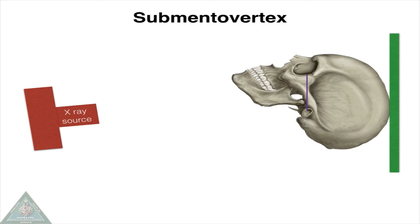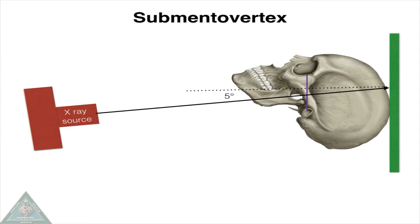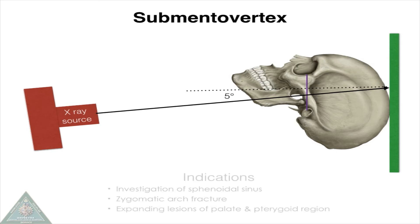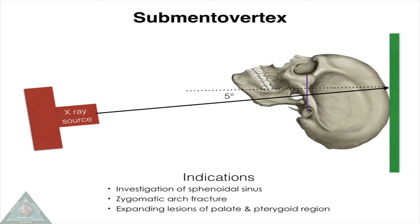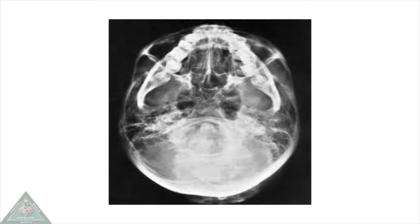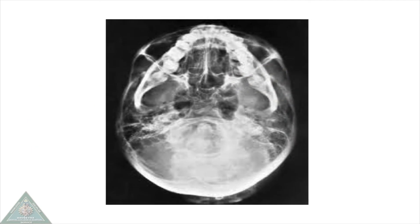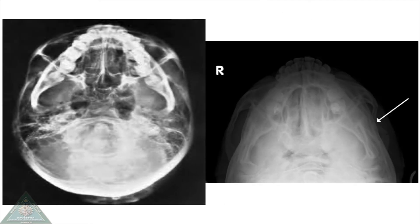Submental vertex view: the patient's head is tilted backwards, the cantho-meatal line is parallel to the image receptor, and the X-ray beam is directed at an angle of 5 degrees to the horizontal, centered through the cranium. This radiograph is mainly indicated for detection of fractures of the zygomatic arch.